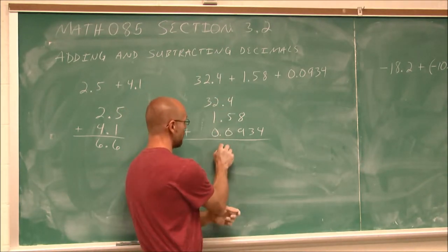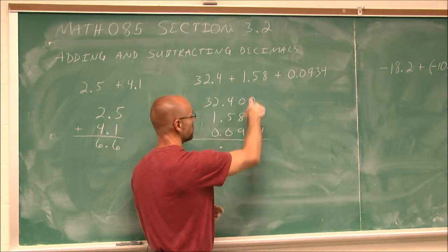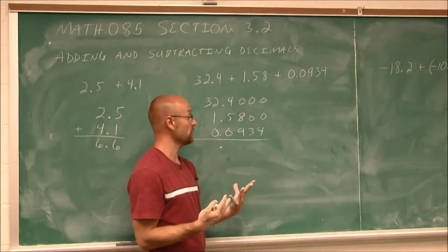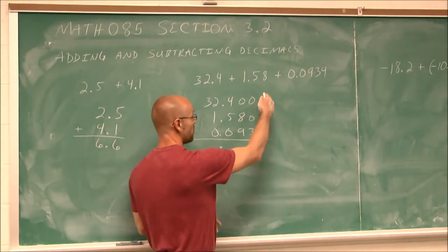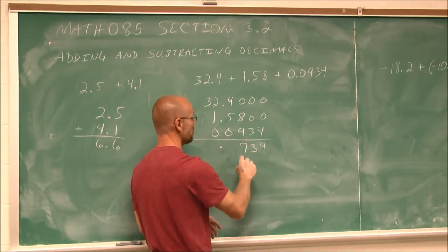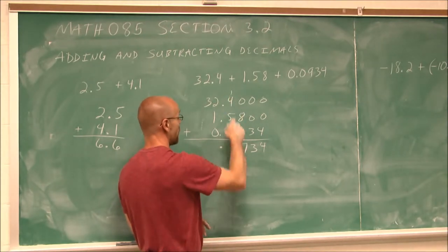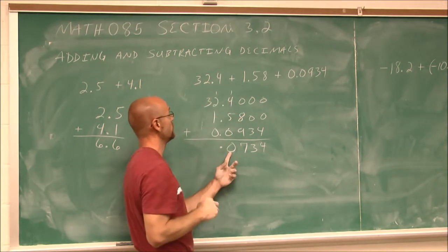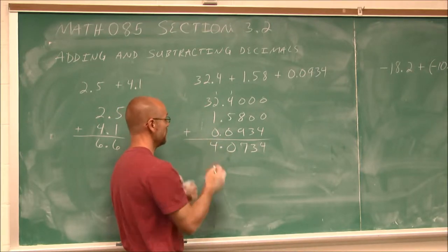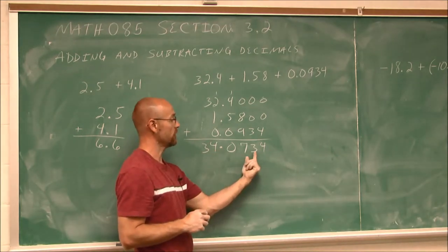Because we lined up our decimal, our decimal point's going to be right here. So here we need some place value holders — these to hold the place value in the thousandths and ten-thousandths. Just like normal addition, we're going to work from smallest value place to largest. 0, 0, and 4 is 4. 0, 0, and 3 is 3. 0, 8, and 9 is 17 — put the 7 and carry the 1. 4 and 5 is 9, plus the 1 carried is 10 — put a 0 and carry the 1. Then 2 and 1 is 3, plus 1 carried is 4. And 3 and nothing is 3. So we have 34.0734, or 34 and 734 ten-thousandths.